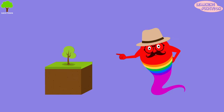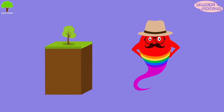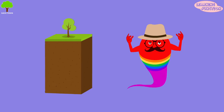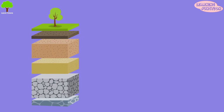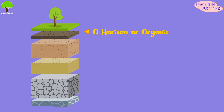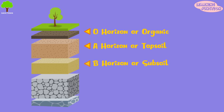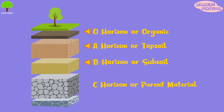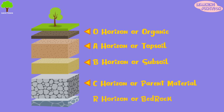Soil is made up of many layers, known as horizons. They are O-horizon or organic, A or topsoil, B or subsoil, C or parent material, and R-horizon or the bedrock.